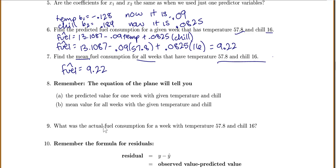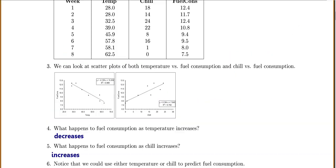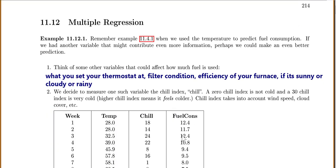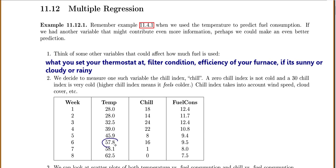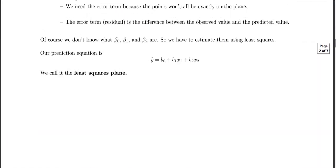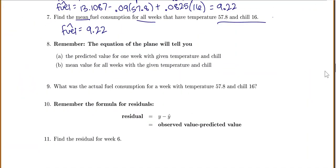Let's see. What was our actual fuel consumption for a week with temperature 57.8 and chill 16? So for that, we have to go back up to our original table. And we're looking for our temperature 57.8 and a chill of 16. So that was week six. And my actual value was 9.5. So this was week six. And actual fuel was 9.5.